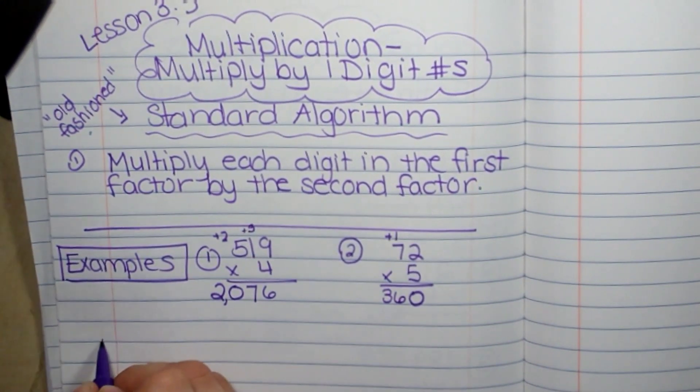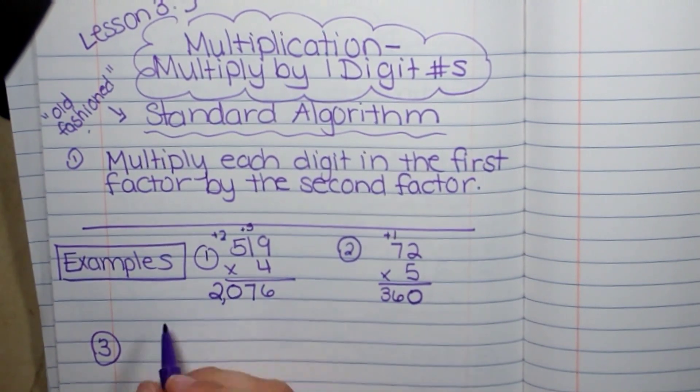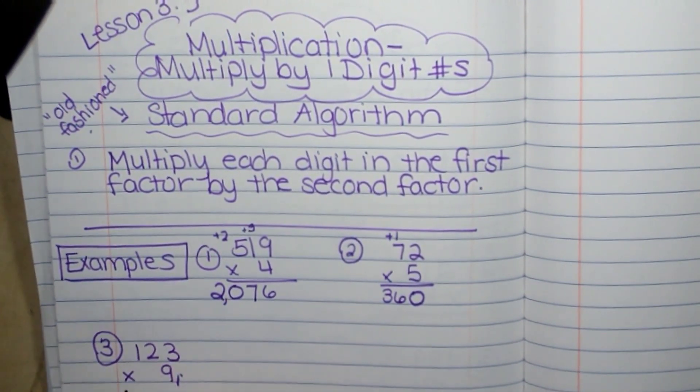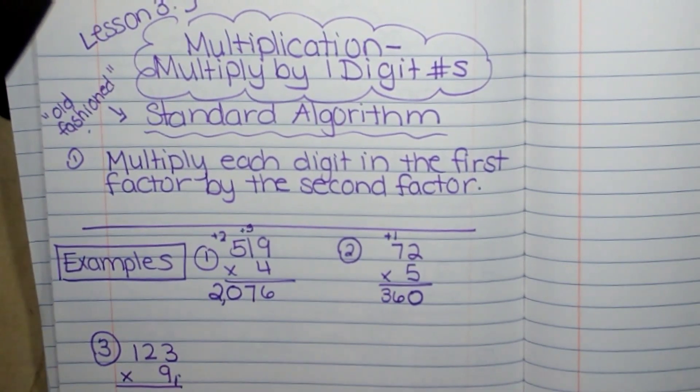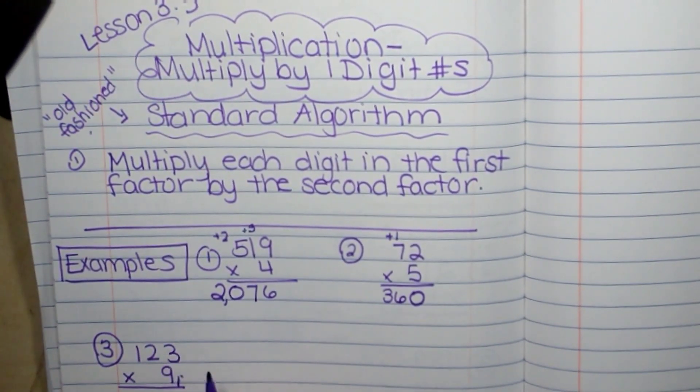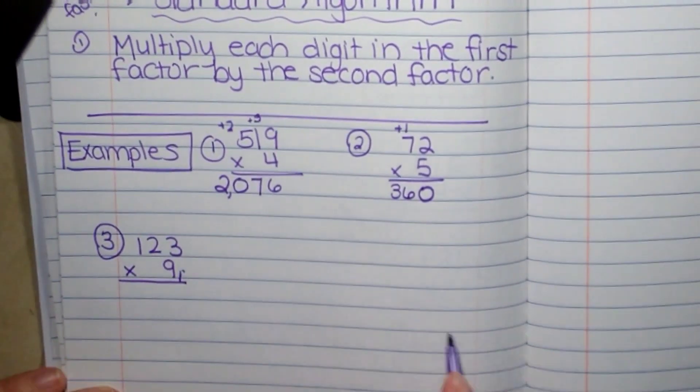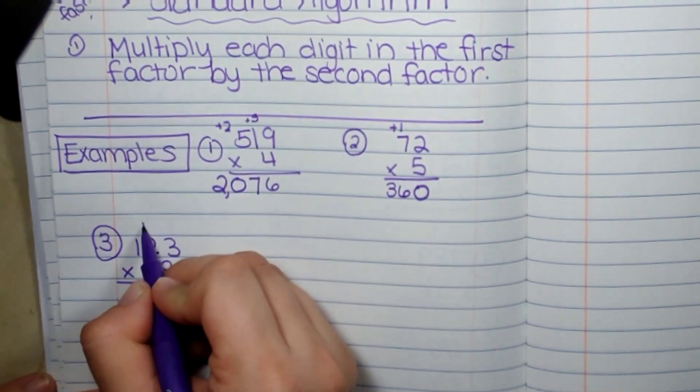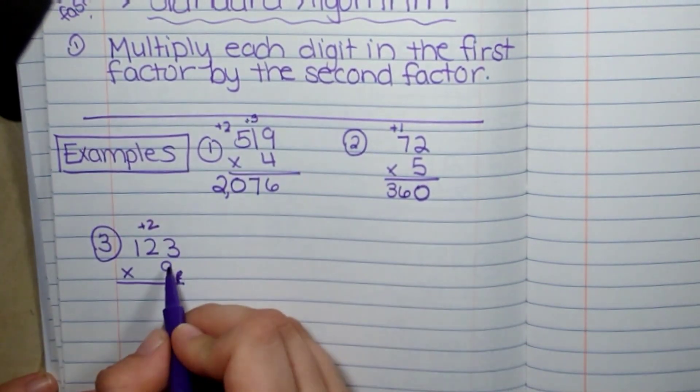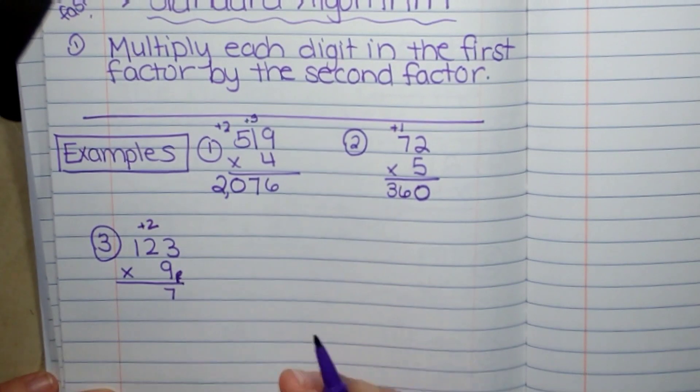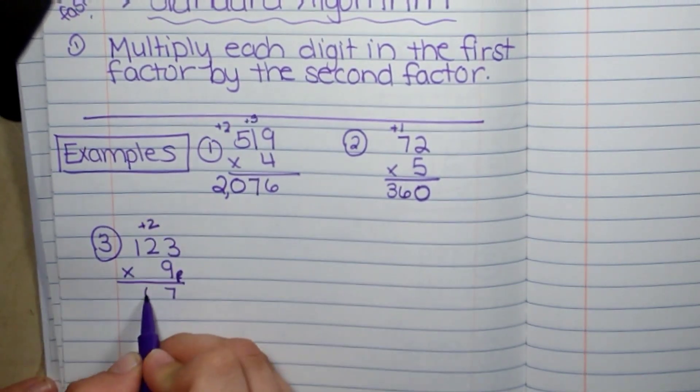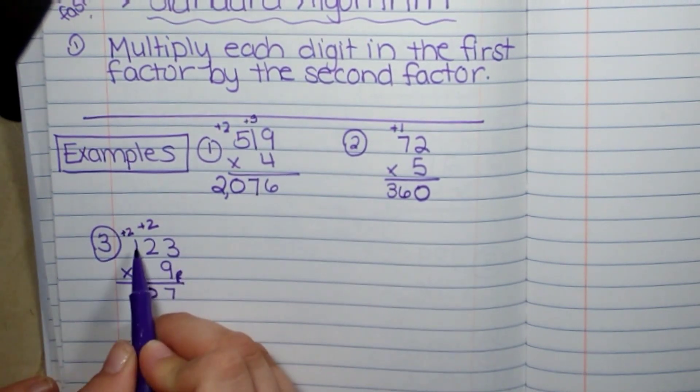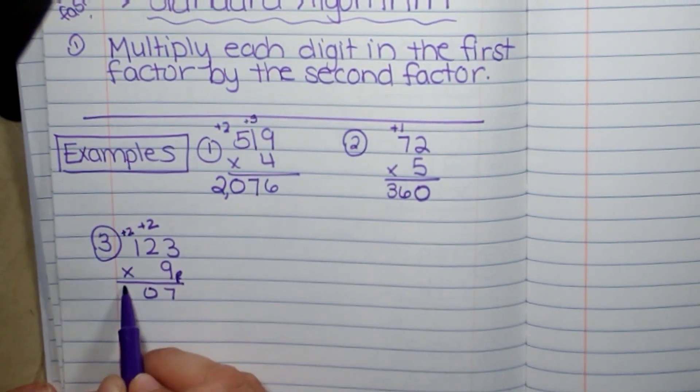Let's do two more. 123 times 9. 9 times 3 is 27. Let's just go and add the 2. 9 times 2 is 18 plus 2 is 20. Carry the 2. 9 times 1 is 9 plus 2 is 11.